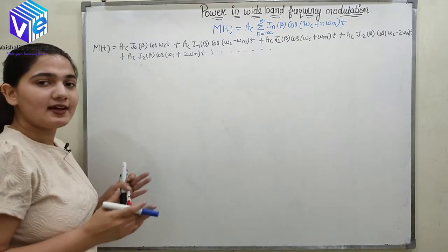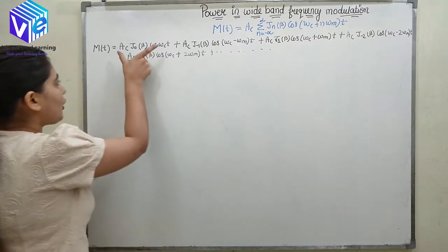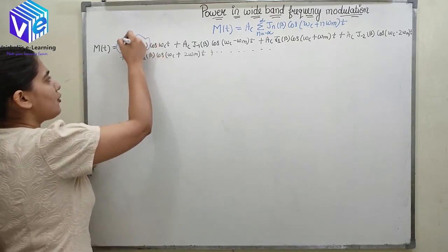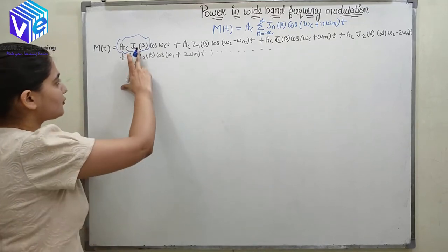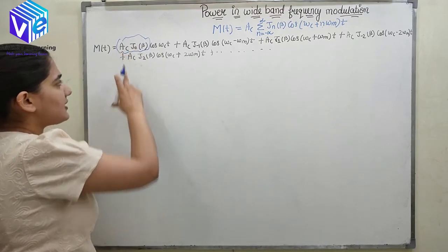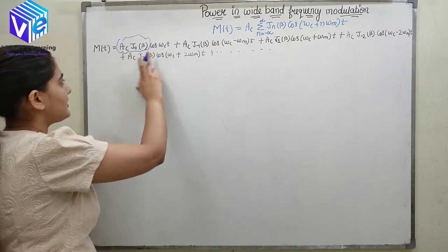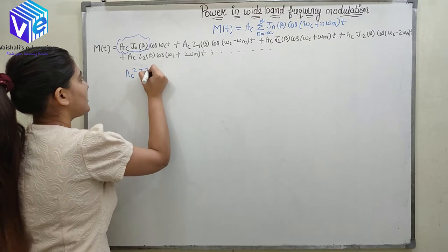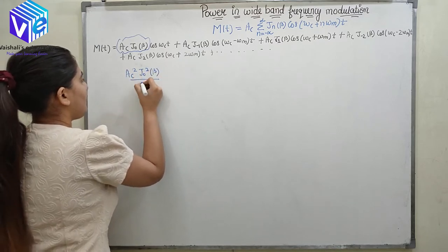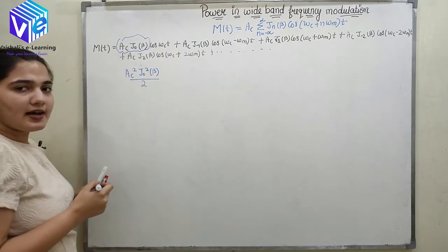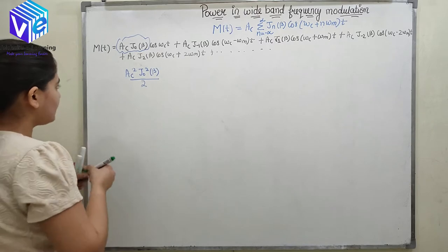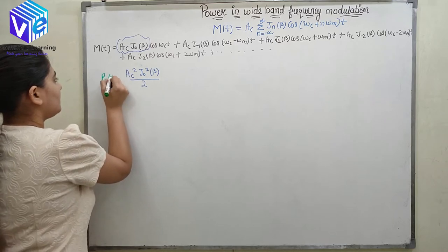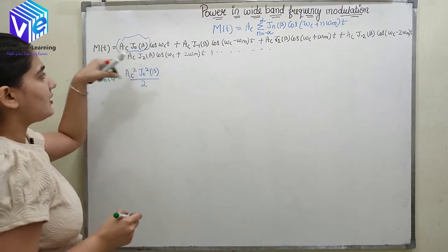We can also express these in the spectral domain. Now if I talk about the power content of the first term: J0(β) is a real term, so AC·J0(β) is just a number multiplied by cos(ωC·T). The power of this term is AC²·J0²(β) / (2R), and taking R=1, this gives us P0, the power of this carrier component.